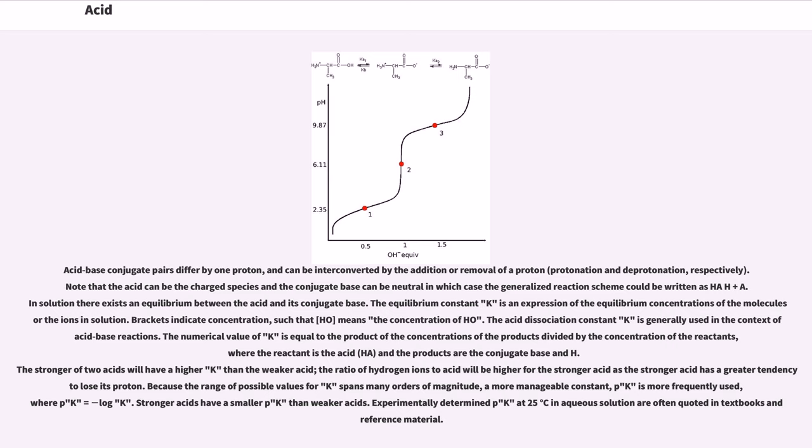In solution there exists an equilibrium between the acid and its conjugate base. The equilibrium constant K is an expression of the equilibrium concentrations of the molecules or the ions in solution. Brackets indicate concentration, such that [H3O+] means the concentration of H3O+. The acid dissociation constant Ka is generally used in the context of acid-base reactions. The numerical value of Ka is equal to the product of the concentrations of the products divided by the concentration of the reactants, where the reactant is the acid (HA) and the products are the conjugate base and H+. The stronger of two acids will have a higher Ka than the weaker acid; the ratio of hydrogen ions to acid will be higher for the stronger acid as the stronger acid has a greater tendency to lose its proton.